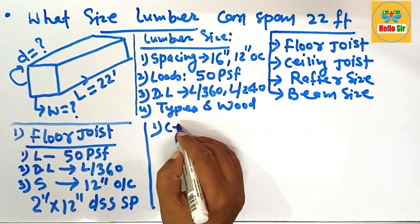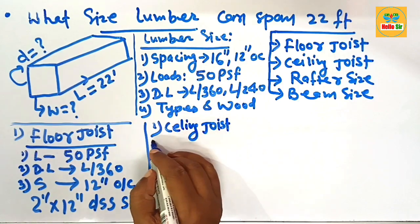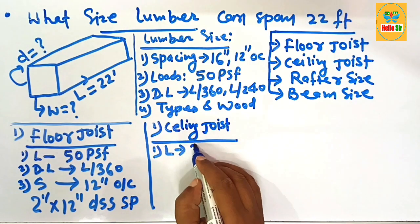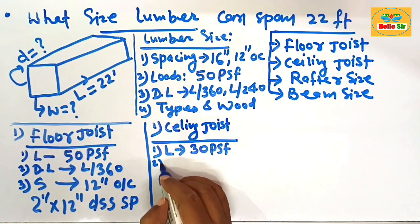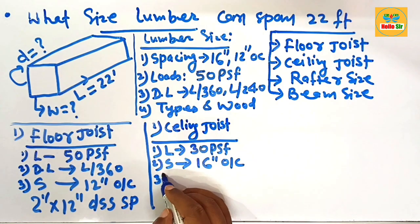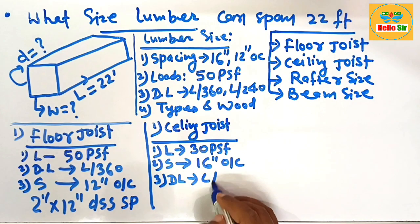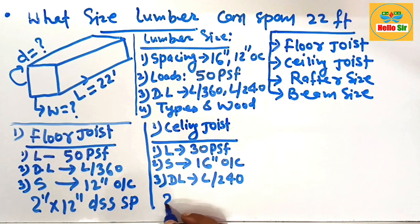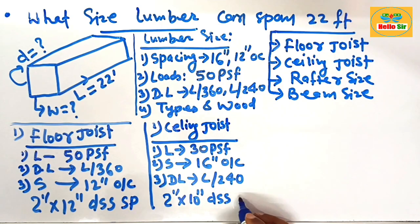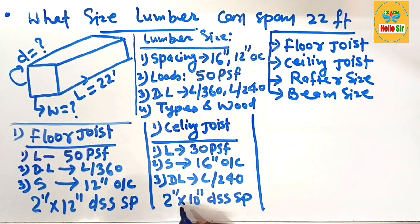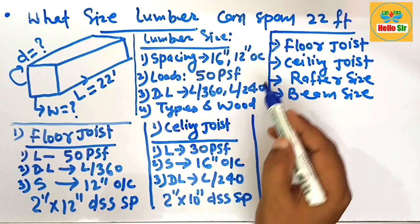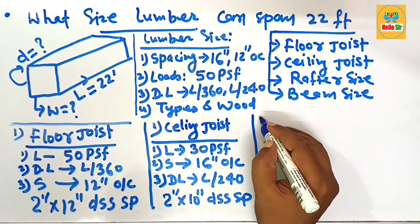For ceiling joist size, the load condition is lighter — it only bears the ceiling and roof load, approximately 30 pounds per square foot. The spacing between joists is 16 inches on center, and the deflection limit is L/240. For these conditions, use 2-inch by 10-inch DSS Southern Pine — dense selected structural — to span 22 feet as ceiling joists.